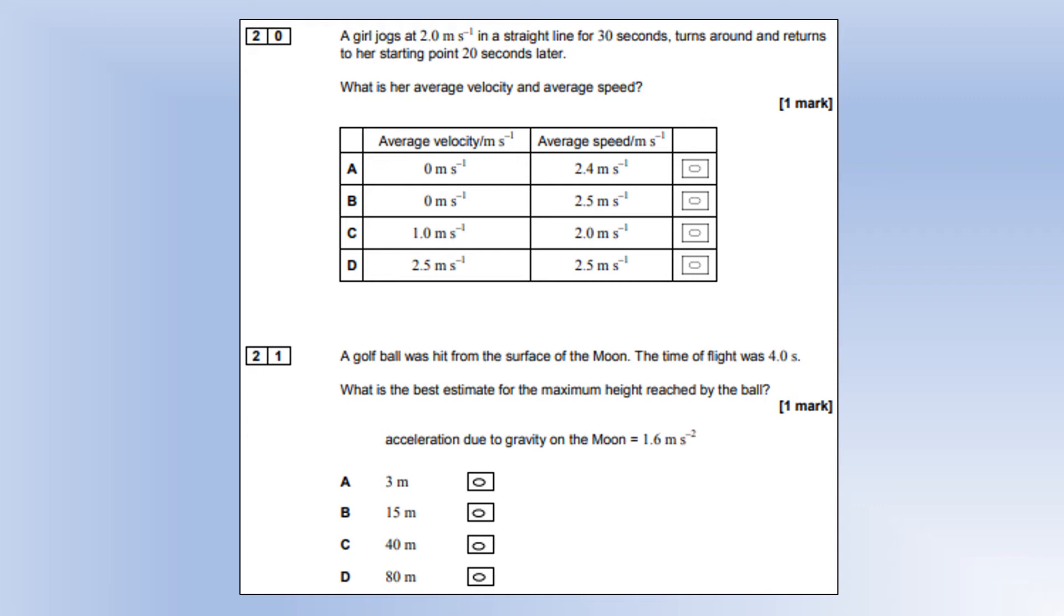A girl starts her jog at two meters per second in a straight line for 30 seconds, turns around and returns to her starting point 20 seconds later. What is her average velocity and average speed? Well, if she's come back to the same place, her displacement is zero. So her average velocity has to be zero. We can eliminate C and D straight away. She's running at two meters per second for 30 seconds and three meters per second for only 20. So she must be below the midpoint, making it option A.